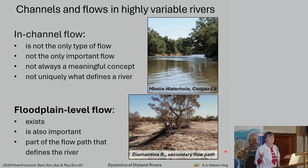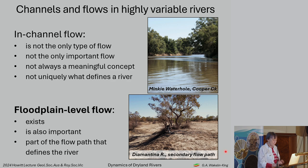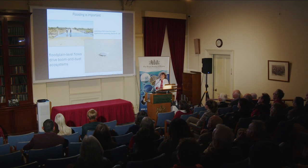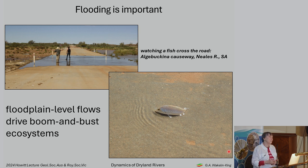Floodplain-level flow exists. It is a thing. It is also important, and it is part of the flow path that defines the river. I have had people say to me that flooding in a river is just a waste — that we could be using that water. Flooding is not a waste.